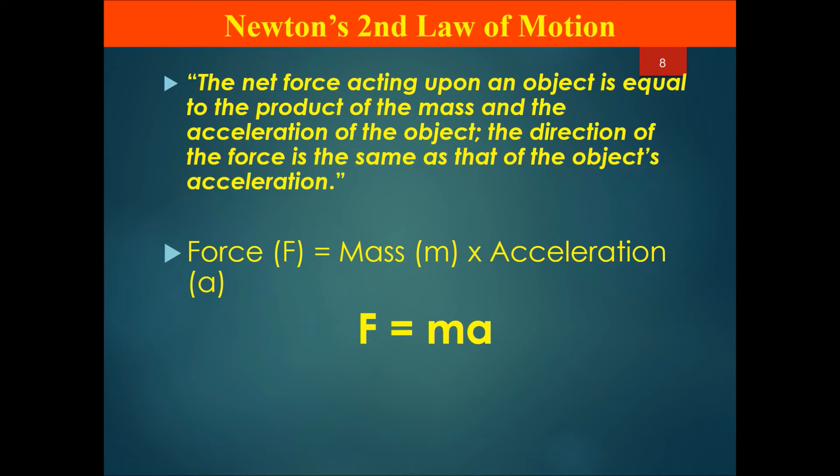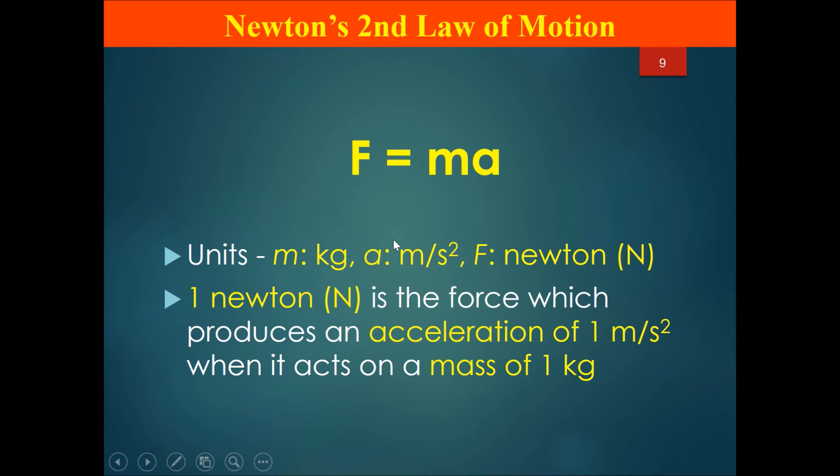For the units: m is in kg, a is in meters per second squared, and F will be in newtons. So one newton is the force which produces an acceleration of one meter per second squared when it acts on a mass of one kg.